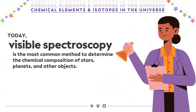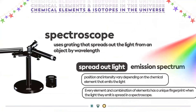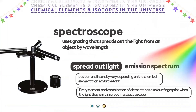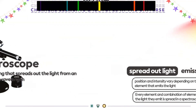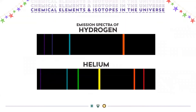Today, the most common method used to determine the chemical composition of stars, planets, and other objects is visible spectroscopy. It is done through a device called a spectroscope which uses grating that spreads out the light from an object by wavelength. This spread out light is called an emission spectrum, and their position and intensity vary depending on the chemical element that emits the light.